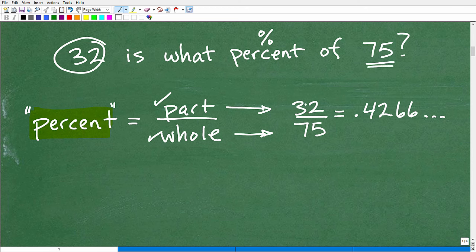32 is the part, and 75 is the whole. And now, when we take 32 and we divide it by 75, we get a decimal. We get 0.4266666.